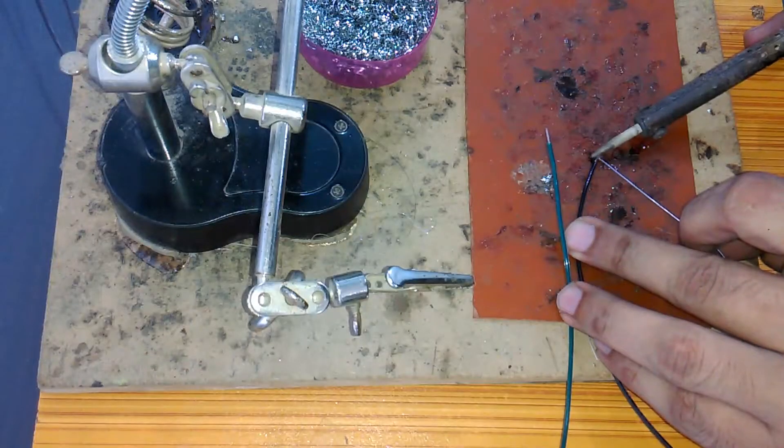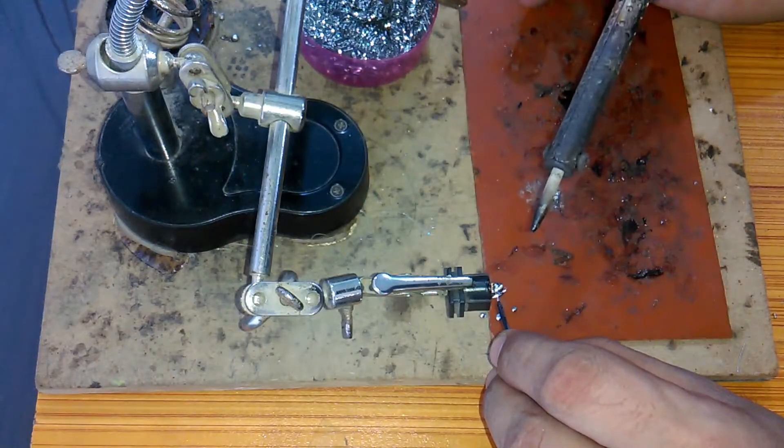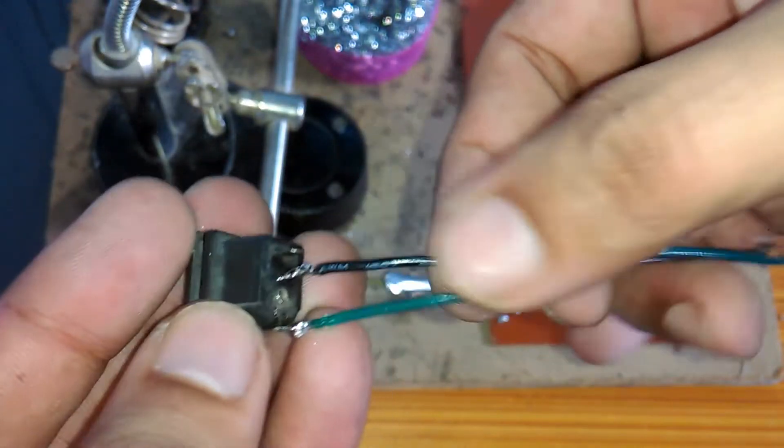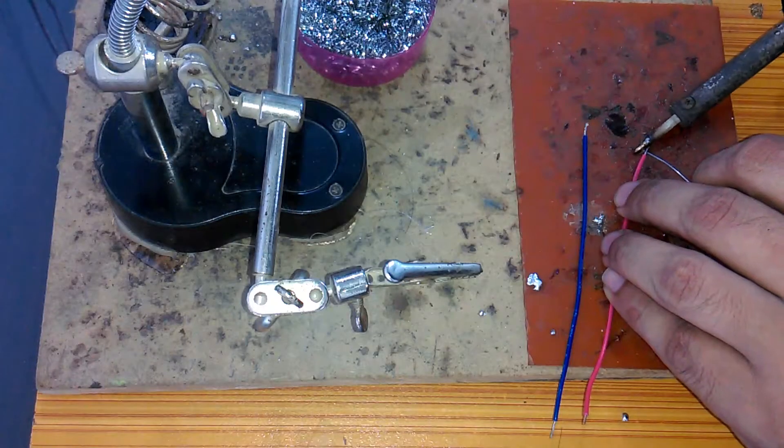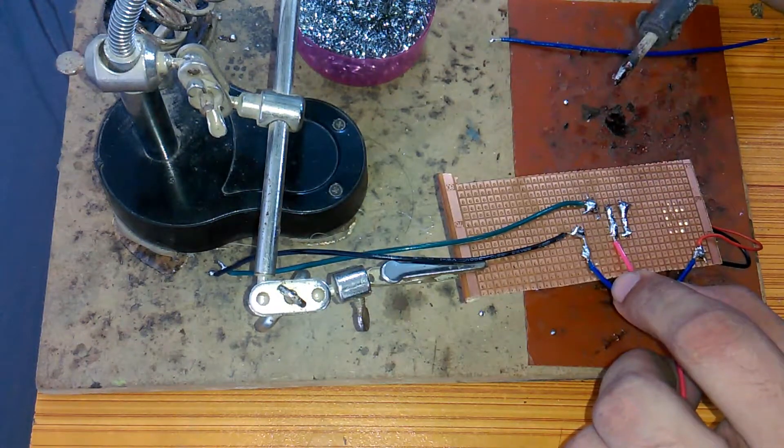Now take two wires and apply some solder, and connect these wires with a female DC socket. Green is the positive and black is the ground. And finally, take two more wires, apply some solder, and connect these wires with Vout and ground.